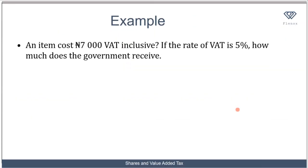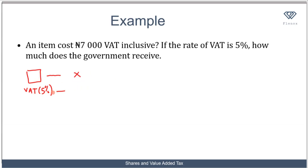Let's look at an example: an item costs 7,000 naira VAT inclusive. If the VAT rate is five percent, how much does the government receive? What 'VAT inclusive' means is that the price given already includes the tax. Let the price of the item before tax be x. The value added tax of five percent on x is five over one hundred times x, which is 0.05x.